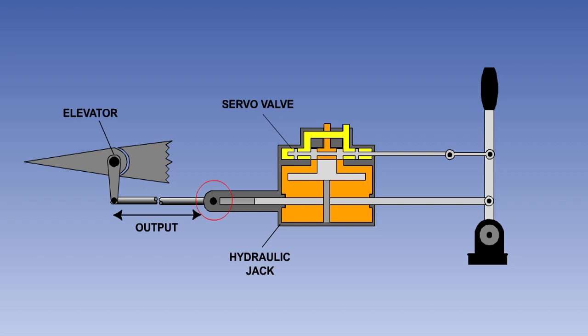while the ram is connected to the pilot's control column. There is a second connection to the pilot's control. This connection moves the valve in the servo unit.